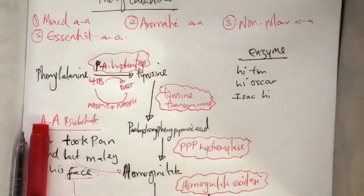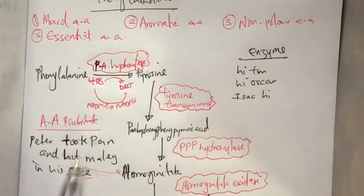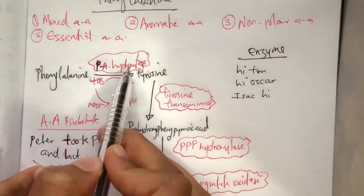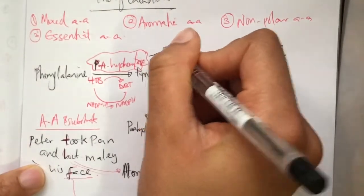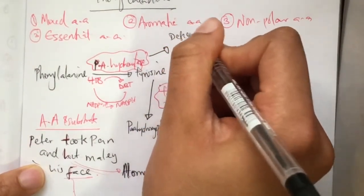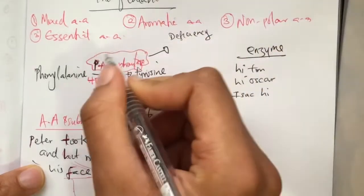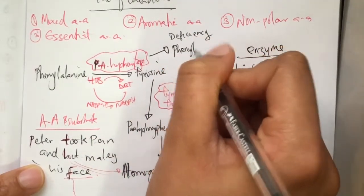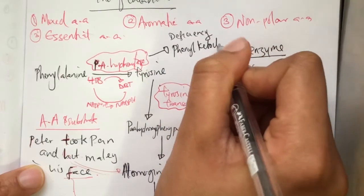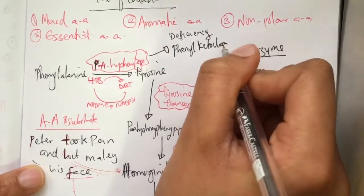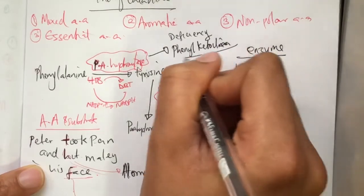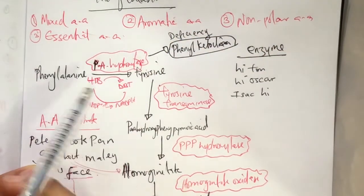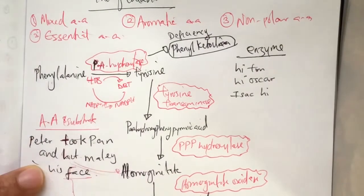Deficiencies in some of the enzymes like phenylalanine hydroxylase leads to a disease known as phenylketonuria. That means you excrete phenylalanine through your urine.